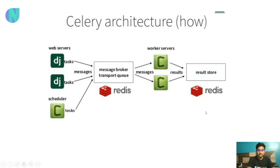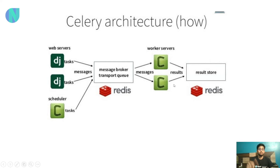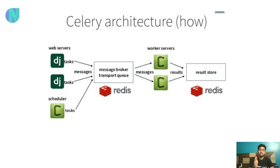Like in the previous architecture, here is the Django application — it executes, this is our message broker, and here the Celery worker continuously works. The message broker stores data and results. As we process each message, we generate and store it in the message broker so we know when a task is complete.